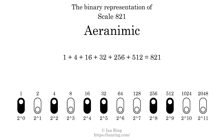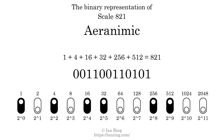The powers of 2 that are present in the scale, all added together, equals 821. That is why the scale number in decimal is 821. The scale number not only enumerates the scale with a unique index, but it also literally describes the tonal content of the scale. Represented as a binary number in base 2, the scale number is 001100110101.